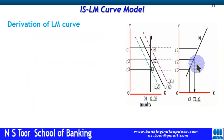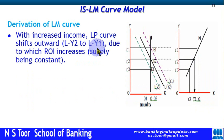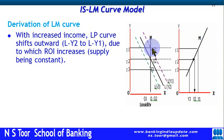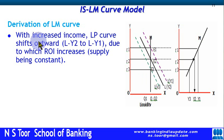Now, derivation of the LM curve. With an increase in income, the liquidity preference curve shifts outward. Originally this is the LP curve; when income increases, this curve moves outward to the right — there is a new curve from LY1 to LY2. This increases the rate of interest. With an increase in income, the LP curve shifts outward, due to which the rate of interest increases.